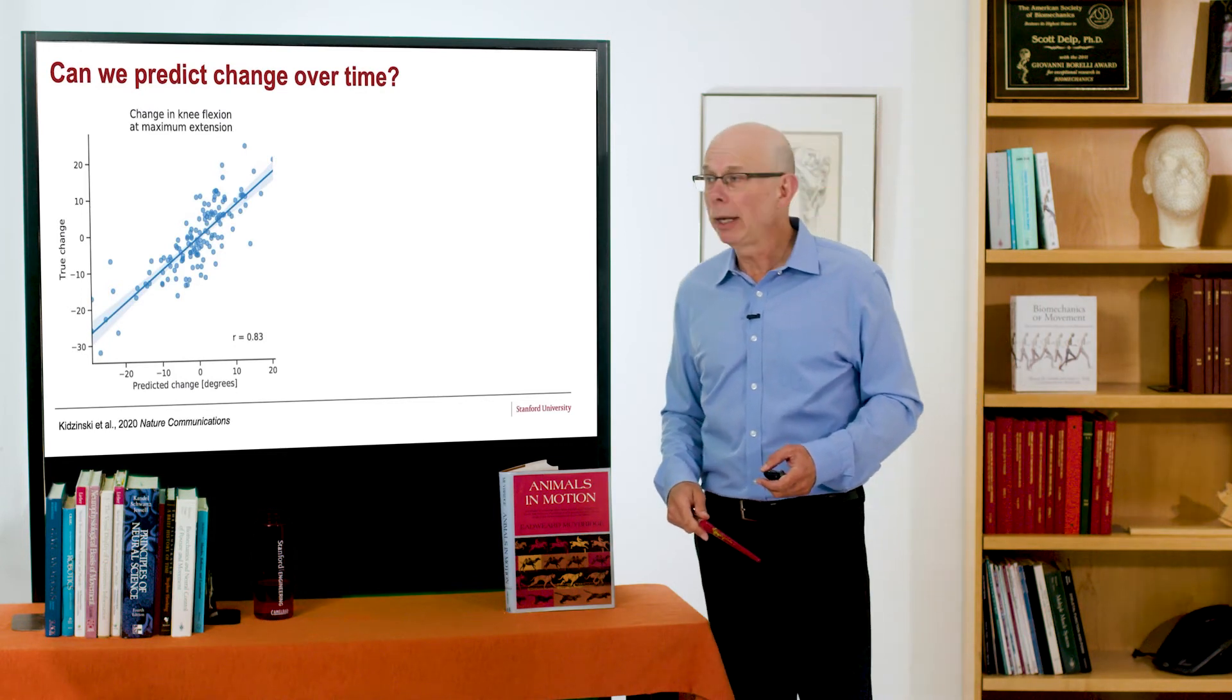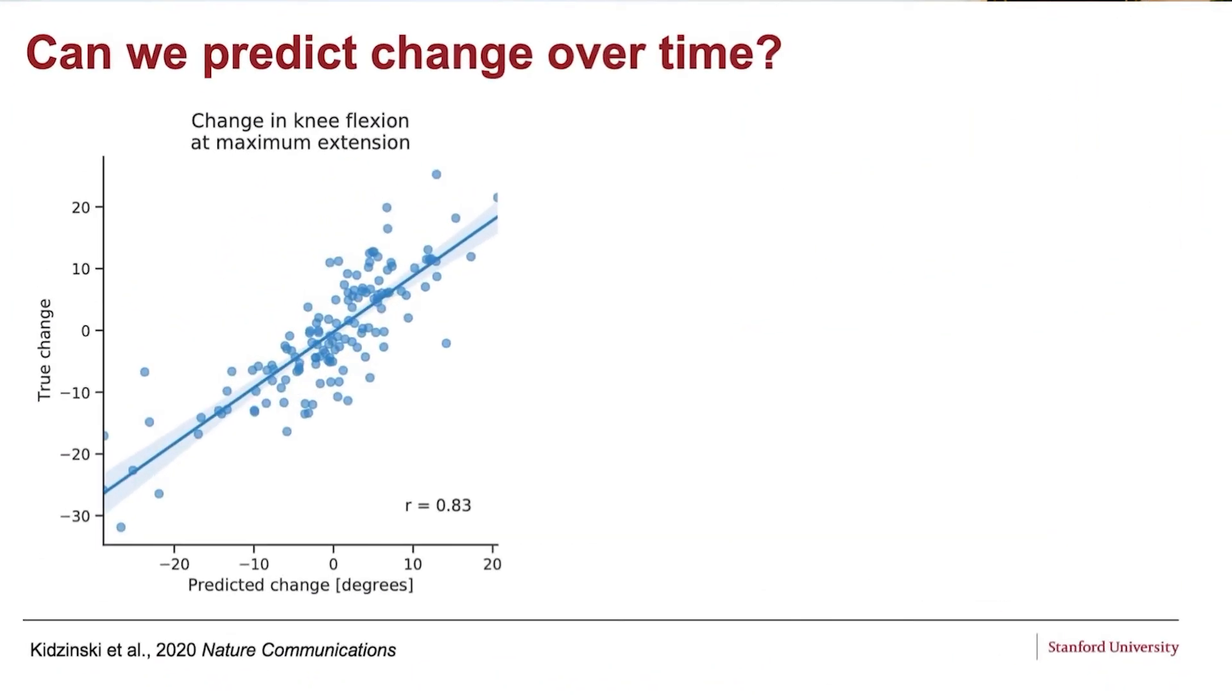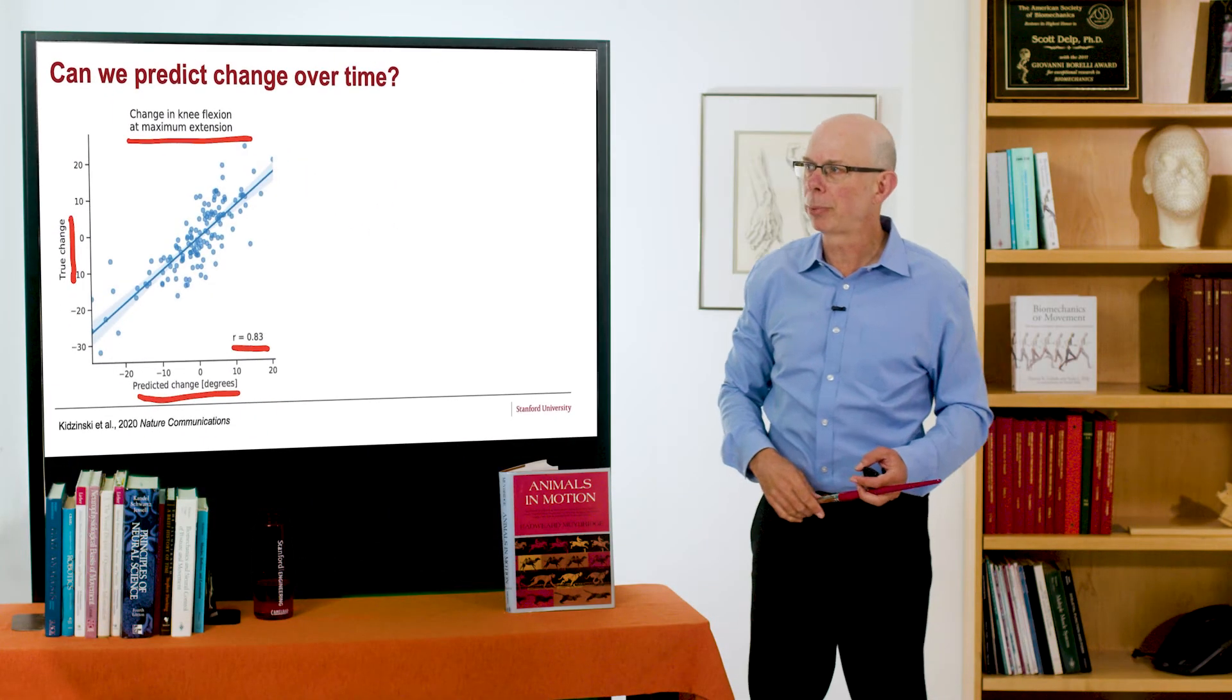Can we predict change over time? Here again, we did quite well. The correlation is 0.83. What I'm plotting is the change in degrees that is predicted versus the true change. And we see quite a nice correlation, so we're getting quite good predictions of our model.